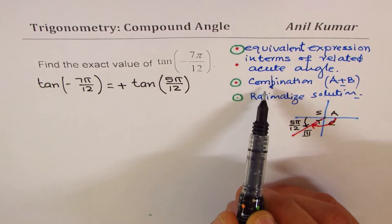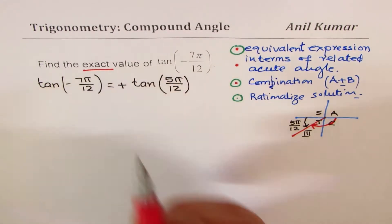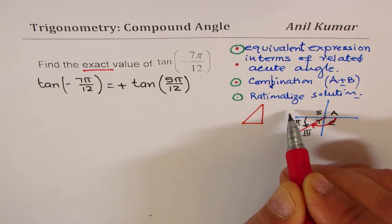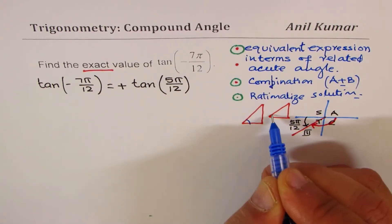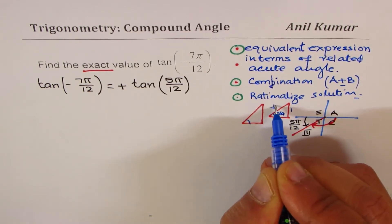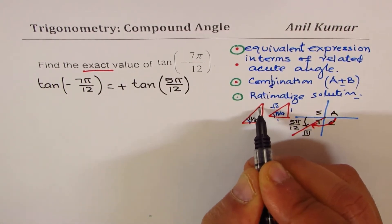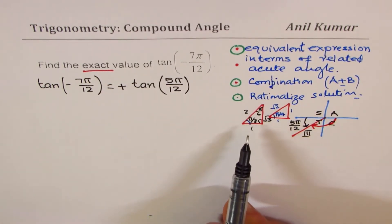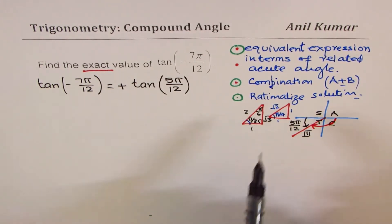Now we have done the first step. Second is we need to write as a combination. If you want exact value, we're actually looking at two triangles: the π/4 triangle with sides 1, 1, √2, and the π/3 triangle with π/6, sides 1, 2, √3. So we want angles in terms of these only, so denominator should be either 3, 4, or 6.